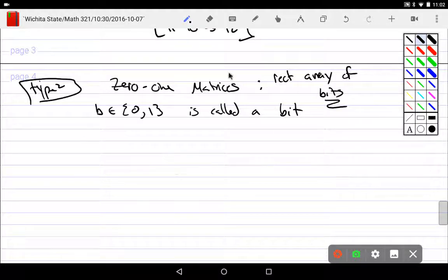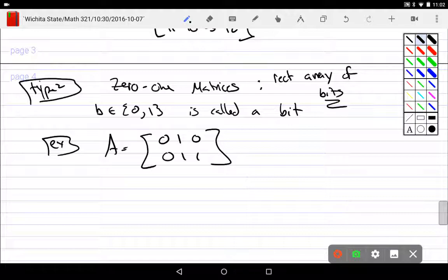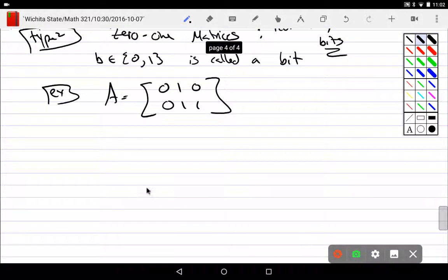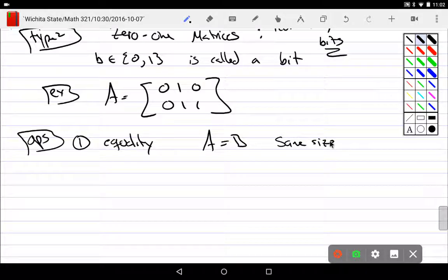This is a rectangular array of bits. So example, A could be made up of, say, 0, 1, 0, 0, 1, 1, something like that. A bunch of 0s and 1s, but they're not 0s and 1s. It's bit 0, bit 1. So what are our ops? First one, what's equality? Well, A equals B is what? Same size, same stuff. I'll just make it nice and easy. Same stuff in same spots.